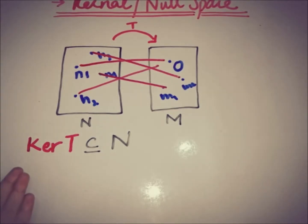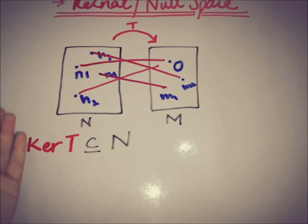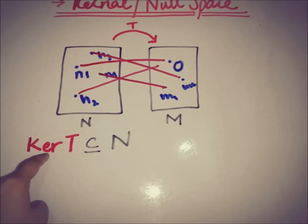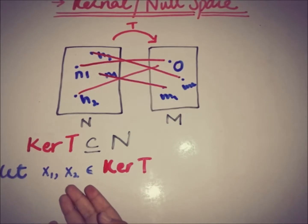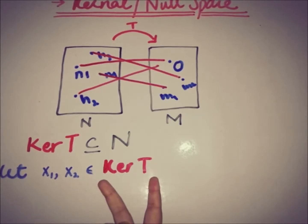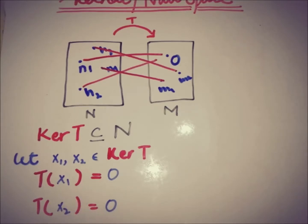To prove this, we take two elements from the kernel of T. The kernel is the set containing elements of N which are mapped onto the zero element of M. Let x1 and x2 be elements of ker(T). Since they are in the kernel, T(x1) = 0 and T(x2) = 0 by definition.